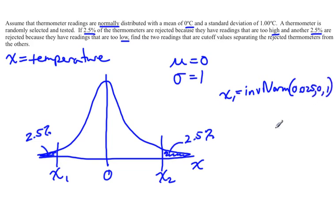Take out your calculator, go into your distribution menu, and do inverse norm. Put in 0.025 for the area, mean of 0, and deviation of 1, and you end up with negative 1.96 degrees Celsius. So X1 is pretty straightforward.